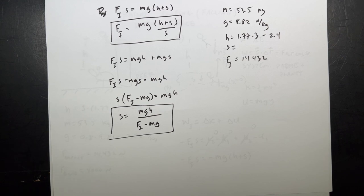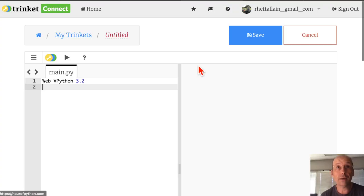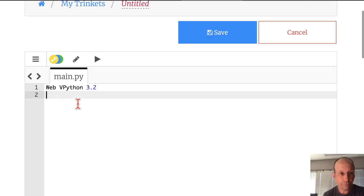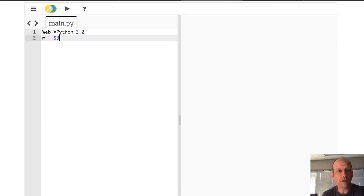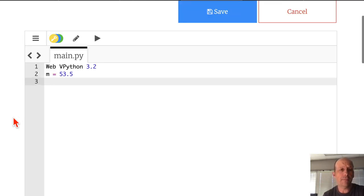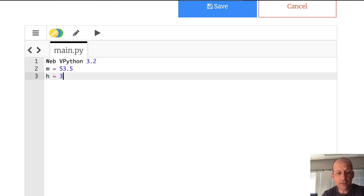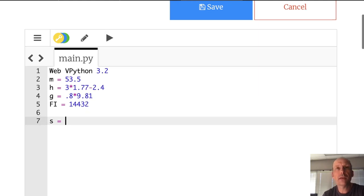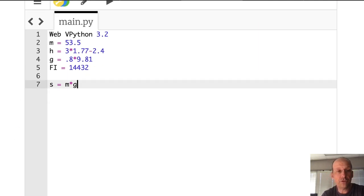And we'll find out what value of S she had. And then I'm going to go back and pick some reasonable values for S and use this equation to calculate the force. So we're going to do both things. You can make a graph of that if you wanted to. I'm just going to calculate it. Okay, Python time. Now I like Python just because it's easy to use as a calculator. Python's right here. Okay, so I'm using Web VPython. Let me just put in my values. I'm going to start off with M is 53.5. You could put units in here. You could put more comments. I'm just going to write it out. H is going to be 3 times 1.77 minus 2.4, so that's 3 Obi-Wans minus the reek in meters. Then I have G as 0.8 times 9.81. I'm just going to recalculate it that way. And then Fi is going to be equal to 14,432 newtons. And now I can calculate S: S is equal to M times G times H divided by Fi minus M times G.